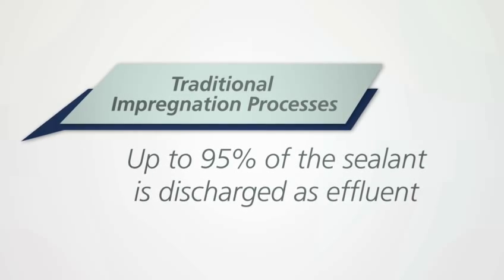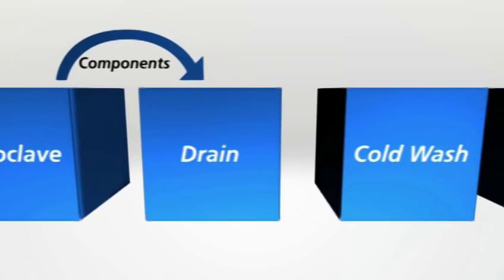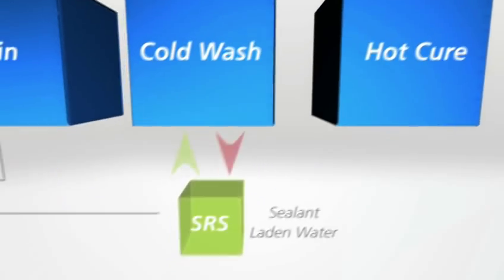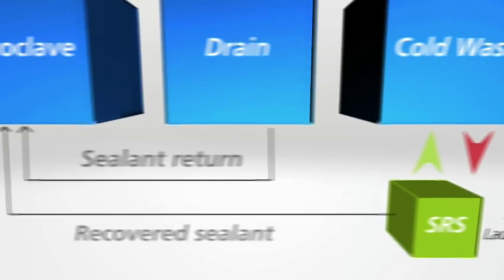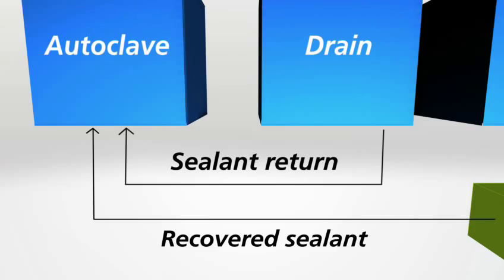In traditional impregnation processes, up to 95% of the sealant is discharged as effluent. But Ultraseal's recovery system retrieves the sealant for reuse. This significantly lowers not only cost to our customers, but the impact on the environment and reducing the effluent and carbon footprint as well.